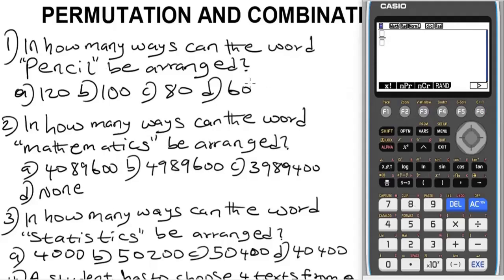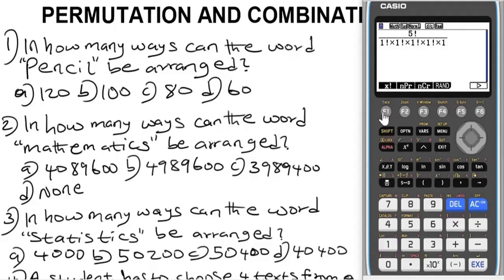You may also use factorial to solve it. The word pencil has five letters, so that's 5 factorial over the distinct letters — which are each 1 factorial, one for each of the five letters. Even if you delete those 1 factorial terms, you will still get 120. There is no need to write 1 factorial, as it doesn't change the result. You still get 120 ways.